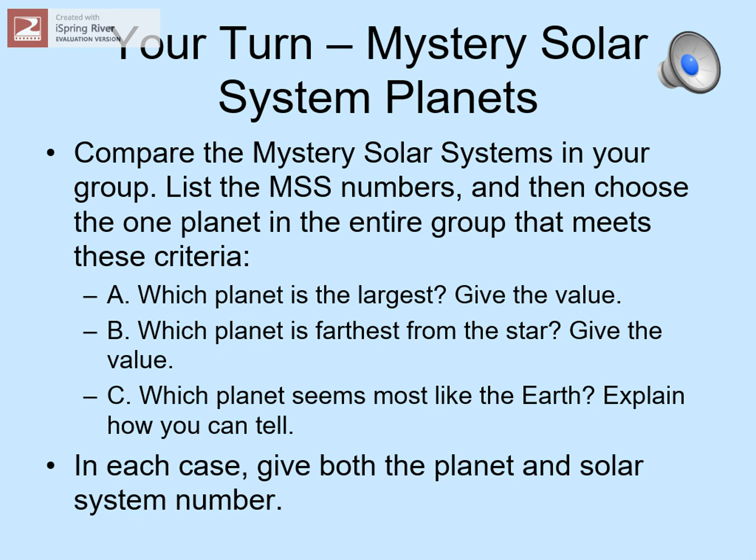Here's another your turn question to work on. You and the folks you work with were probably assigned mystery solar systems that you'll be studying this semester. Each of you should have a different solar system. What we'd like you to do is compare the planets in your different solar systems and see who has the biggest, the farthest, and the most Earth-like planets, and then give the information on those planets. This will give you a chance to start using your mystery solar system data sheet and see how different solar systems compare with each other. Remember, we don't want you to just give your planets — you'll need to compare with the rest of your group to come up with the one planet that is most extreme in each category. If you're working alone, then you should just use your own system.